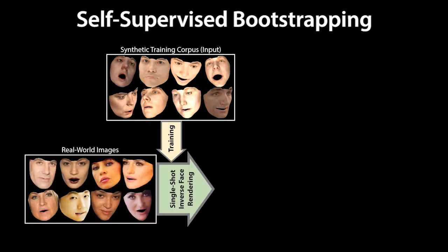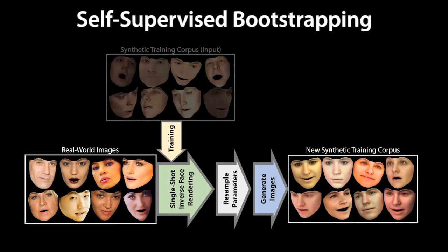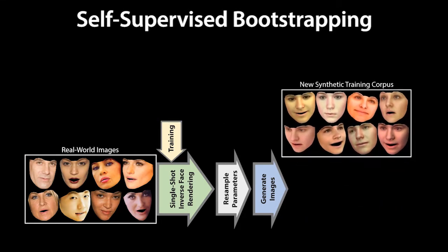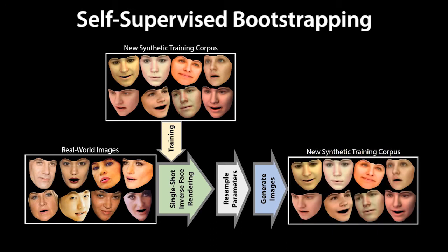Given a set of real images, we regress the corresponding model parameters to start the bootstrapping process. In the next step, we apply small parameter perturbations. This generates synthetic facial imagery that better represents the real world. Finally, we create a new training corpus from the images and fine-tune our inverse face rendering network. This process is iterated until convergence.